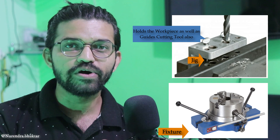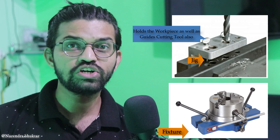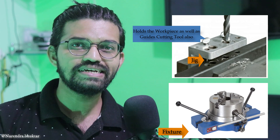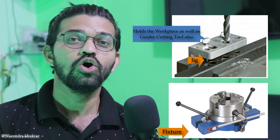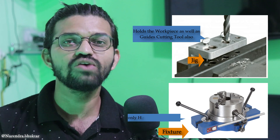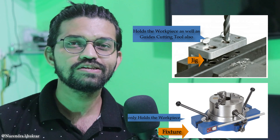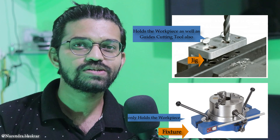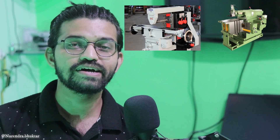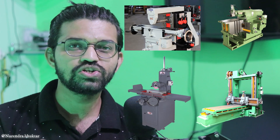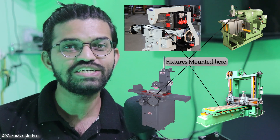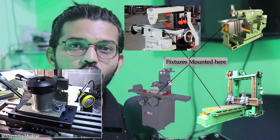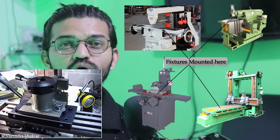This is known as a jig. Whereas in case of the fixture, these are very heavy, bulky types of work-holding devices whose sole purpose is to hold the workpiece. These fixtures you can see in milling machines, shapers, grinders, and planer machines. These fixtures are mounted on the table with the help of t-slots, and on that particular fixture the workpiece is mounted.